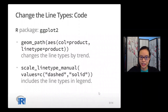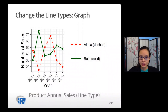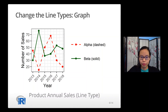To make it accessible, one way is to change the line types. We use ggplot2's function geom_line(linetype = product) to change the line types by the trend. We also use scale_linetype_manual, dashed and solid, to include the line types in the legend. The graph becomes accessible because alpha is dashed and beta is solid, and the two trends can be distinguished without color.